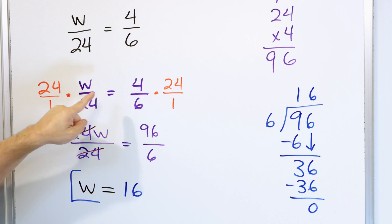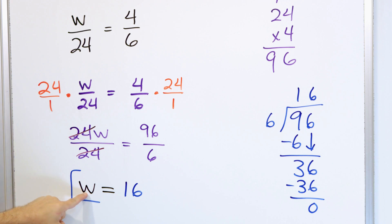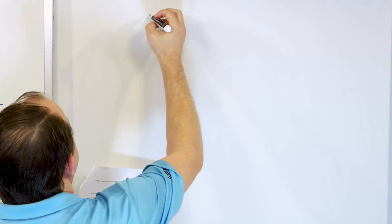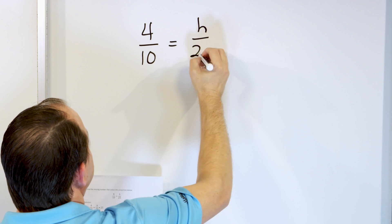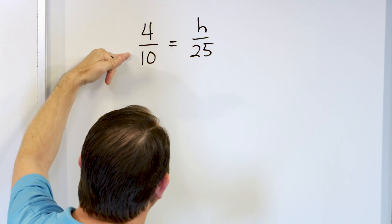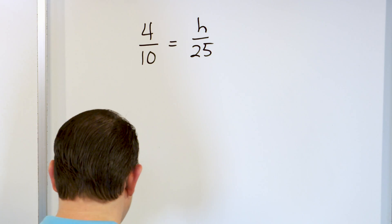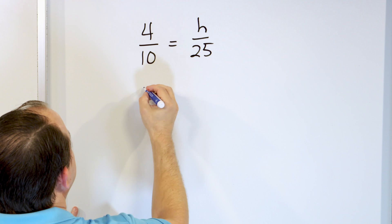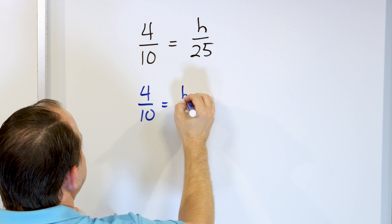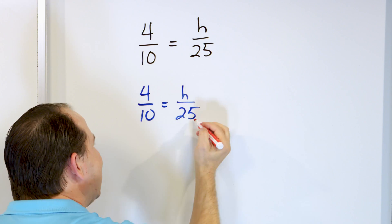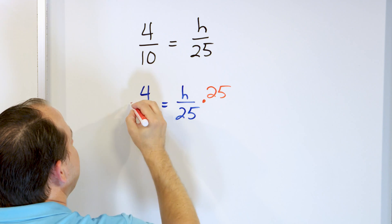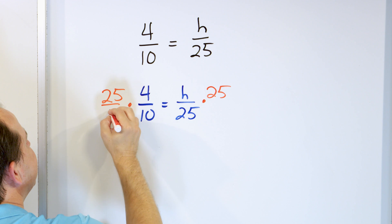Making good progress. I told you we're just doing more of them because I want you to get the idea that every time you solve an equation, you have to do the opposite and you're trying to get the variable by itself. Let's take a look: four as it compares to 10 is equal to some unknown number h as it compares to 25. We know it has to be less than 25 because four is less than 10. So we multiply both sides by 25, writing it as 25 over one.